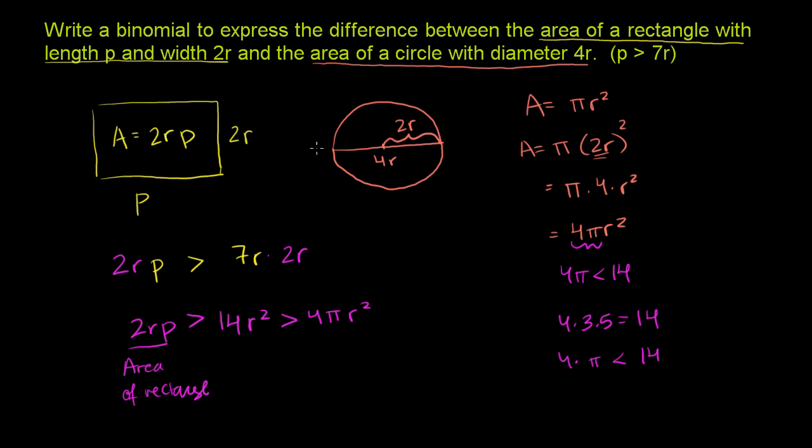So we can just subtract the circle's area from the rectangle's area to find the difference. So the difference is going to be the area of the rectangle, which we already figured out, is 2rp. And we're going to subtract from that the area of the circle. The area of the circle is 4 pi r squared.